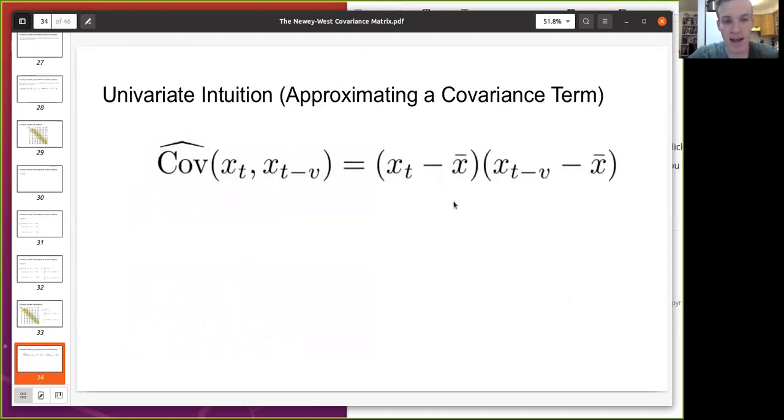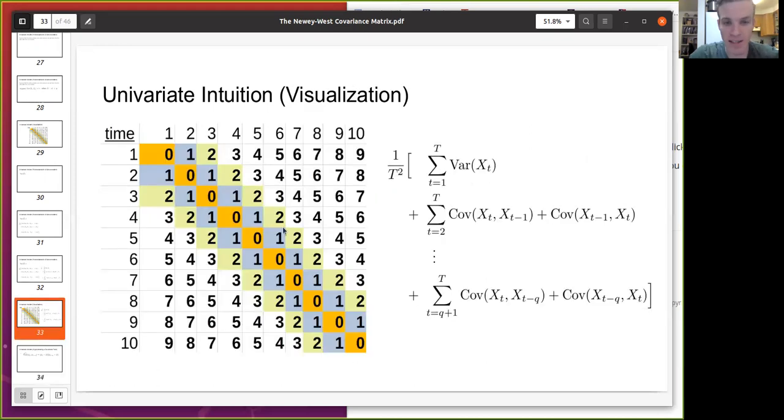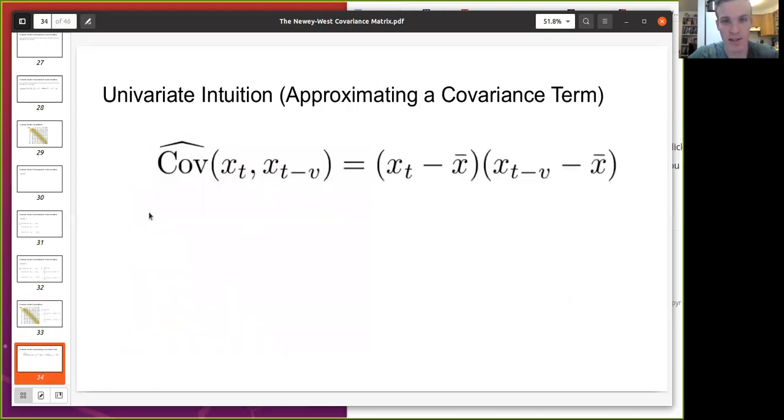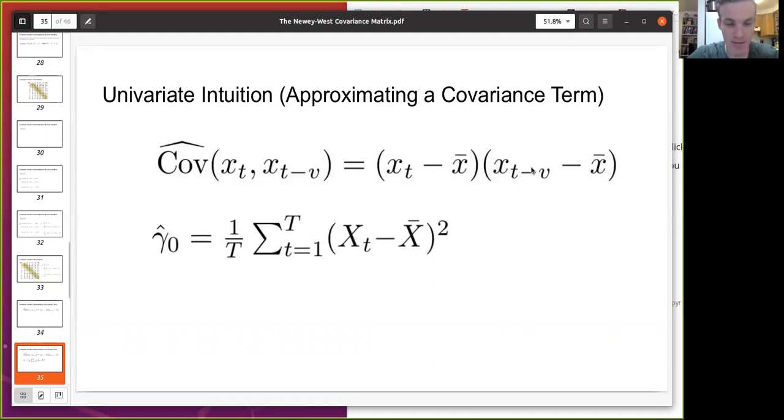So now what we want to do is we want to find some estimate of these terms. Well, the definition of covariance is we take the expected value of these guys, but since we only have one observation, we're just going to use an approximation as just a single term, because that's the best we can do with what information we have.